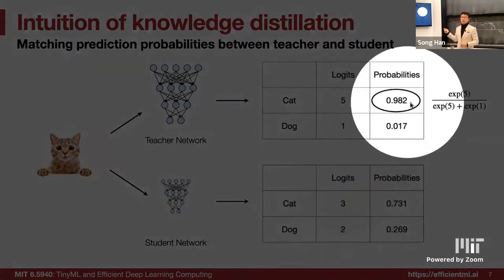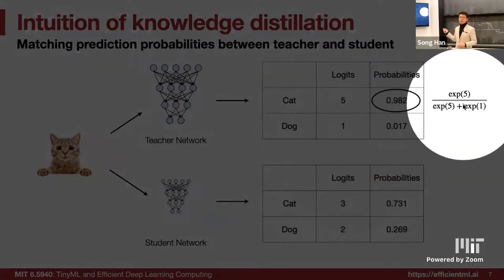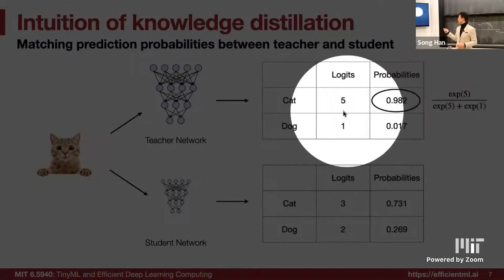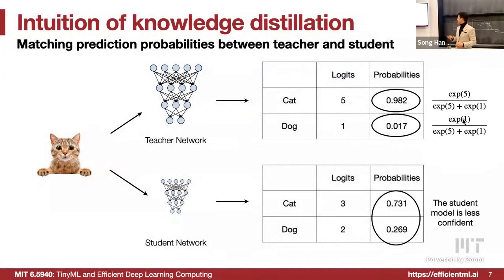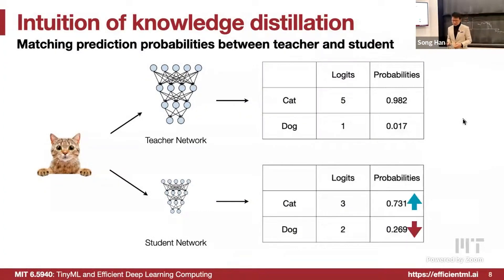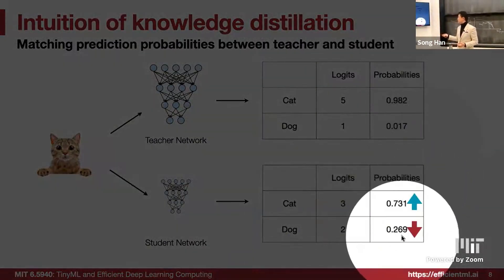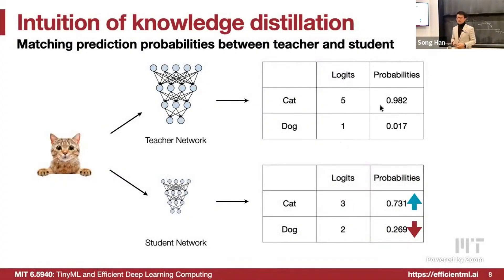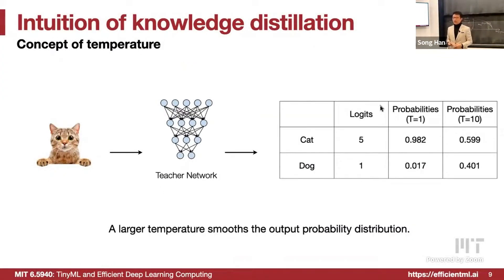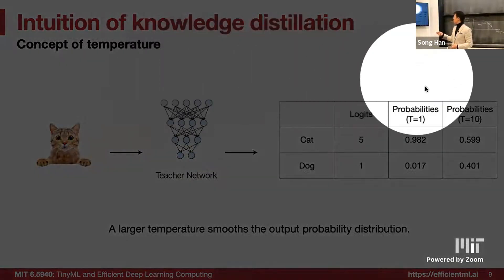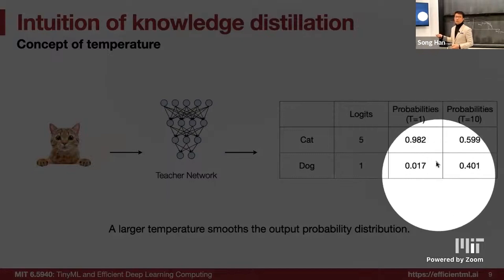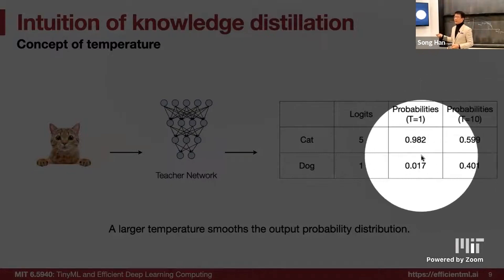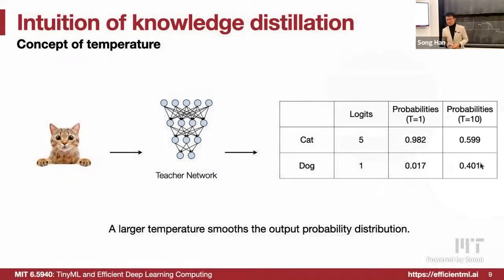How do we derive this probability? Through the softmax function. The temperature concept: if temperature is 1, that's the original case. If temperature is larger, then the output distribution gets smoother. Rather than 98% and 1.7%, with a higher temperature this becomes 60% and 40.1%. A larger temperature will smooth the output probability distribution.